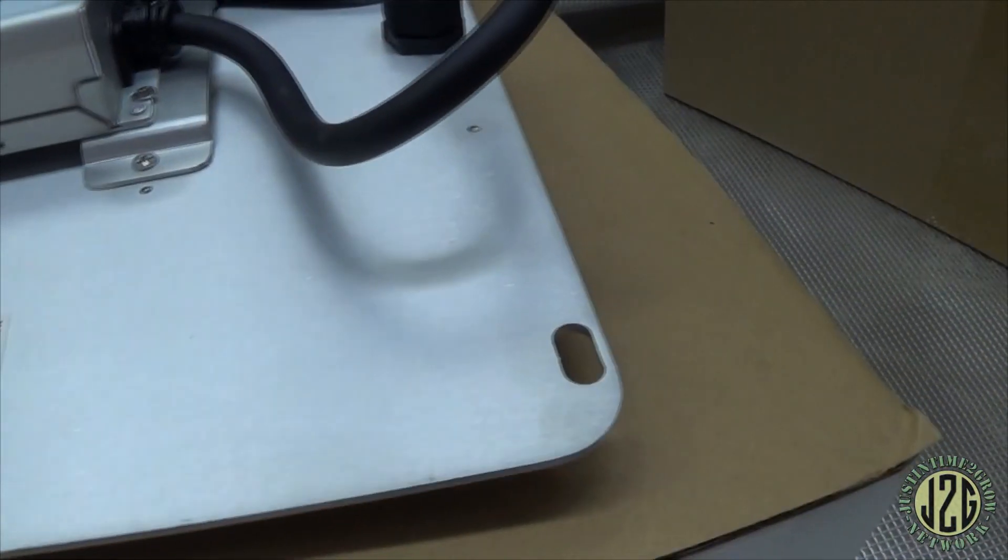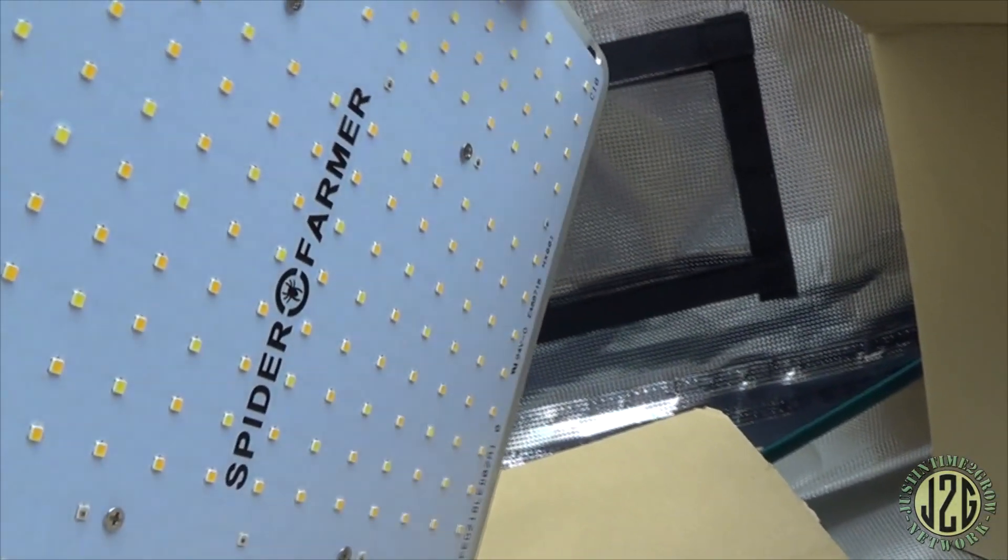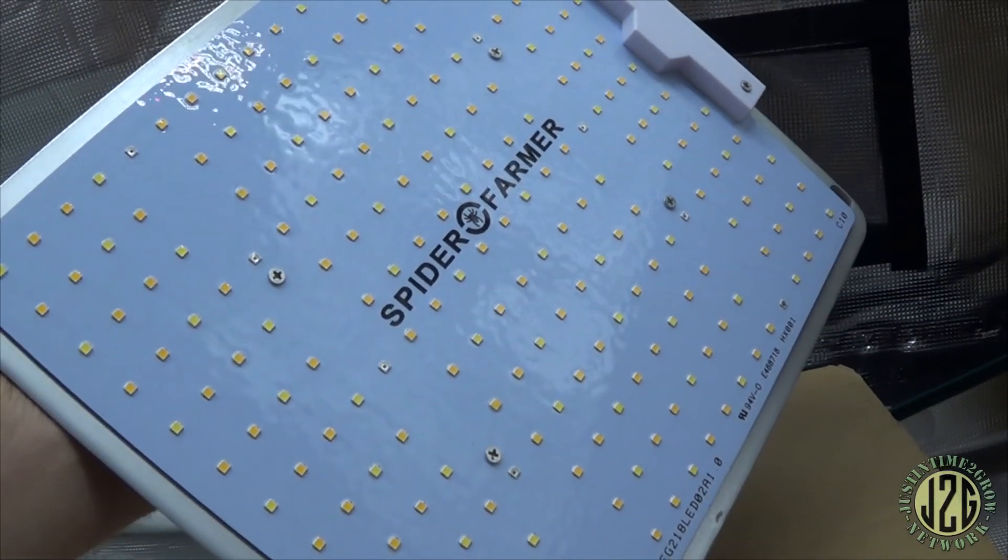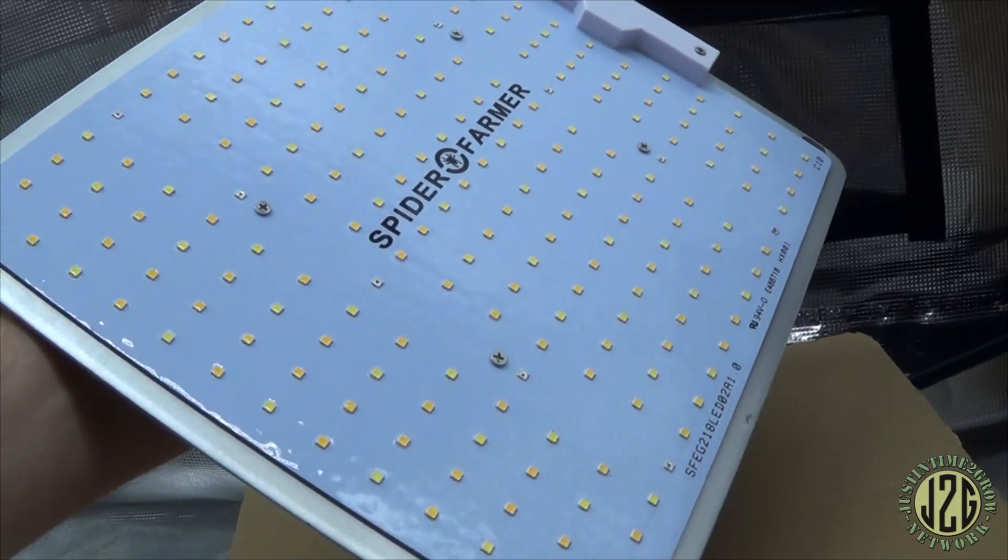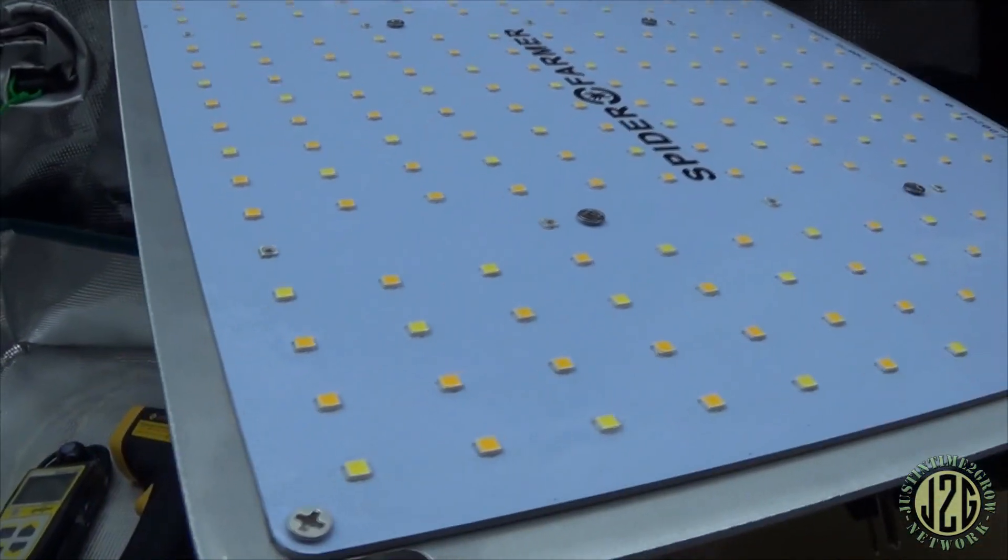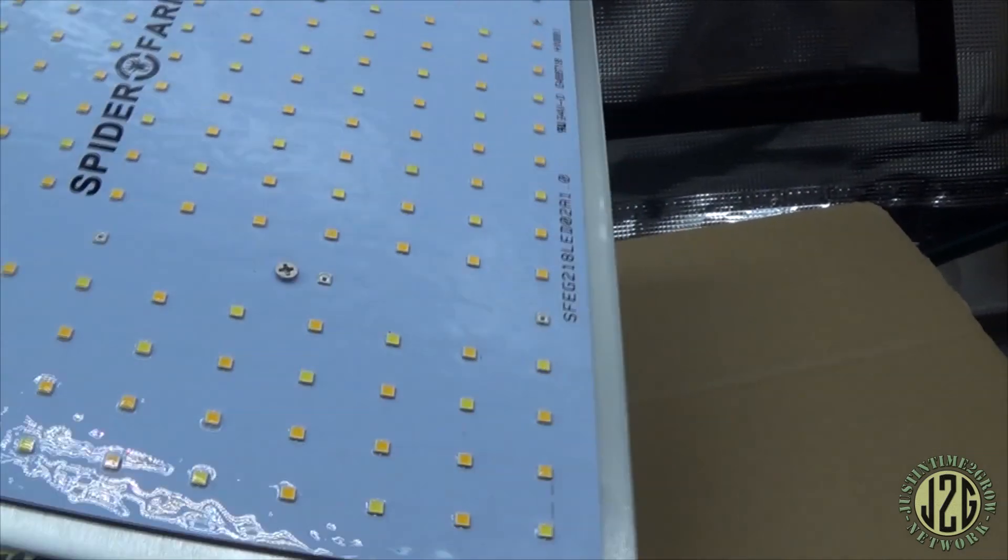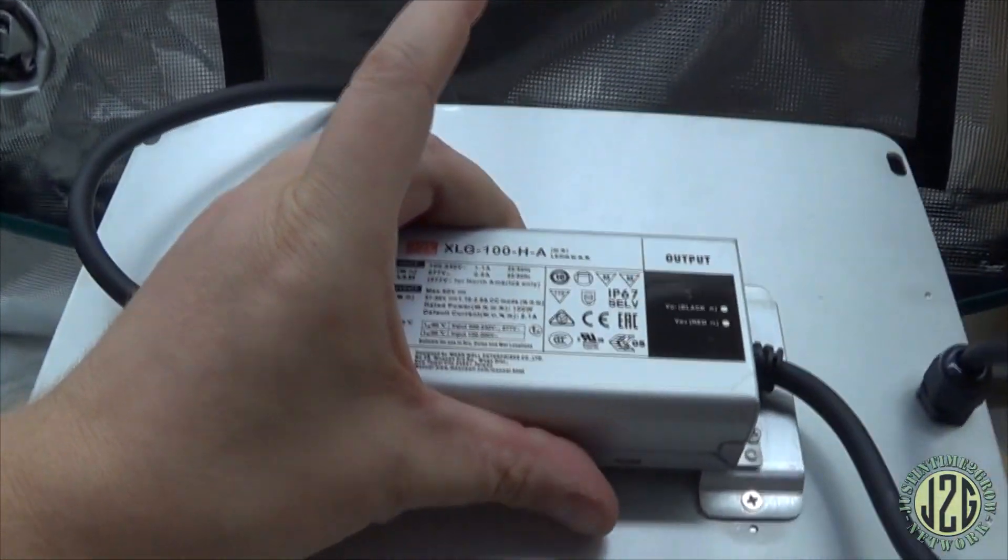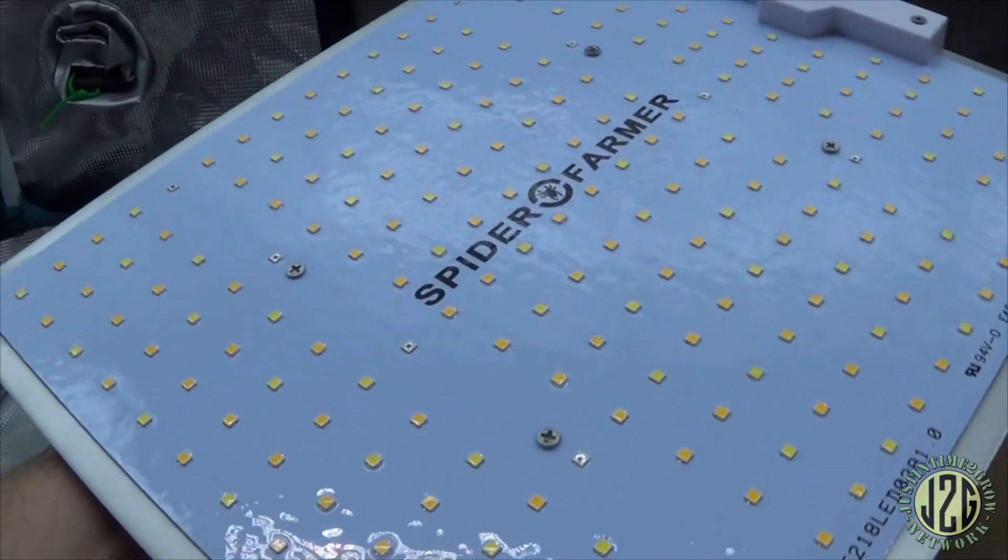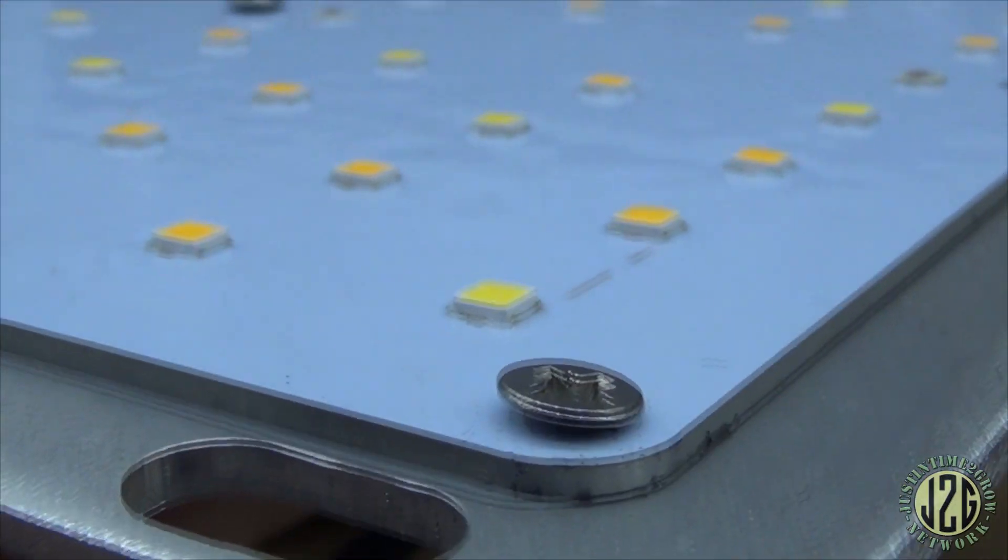Take a look here, no dust or anything on it, no particles. Let's flip this sucker over. BAM, Spider Farmer! That is a nice-looking light to be quite honest. It's basically just a quantum board. This is the model SF-1000 Spider Farmer. It's got the Mean Well driver, it's got the Samsung LM301B chips.